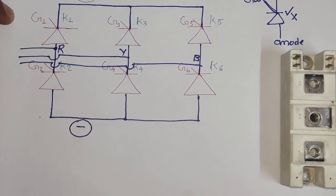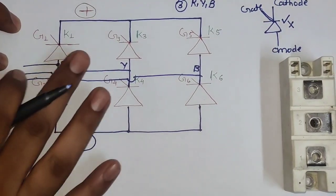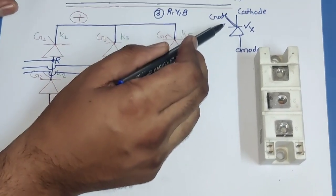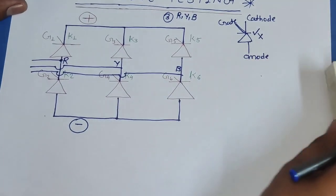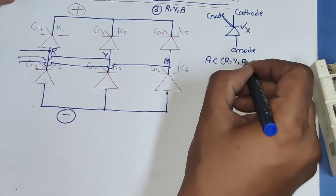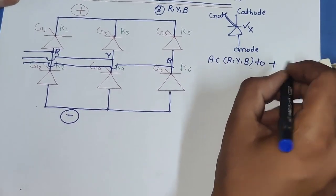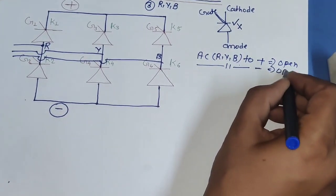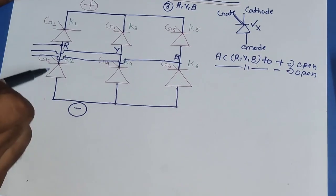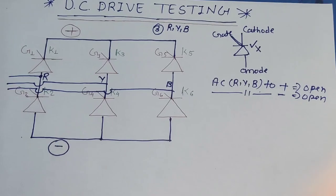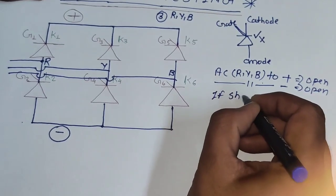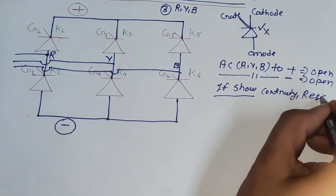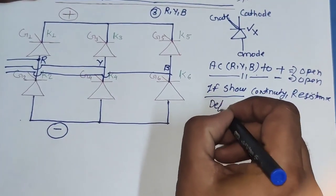For testing the drive, recall the basic concept of SCR: anode to cathode, no conduction will happen. The cathode is connected to the positive of the drive, and the anode is connected to the AC supply. So from AC supply R, Y, B terminal to positive, it should show open. Also R, Y, B to negative should show open. If any resistance or continuity is showing when you check R, Y, B to plus and R, Y, B to minus, that means your thyristor is defective.